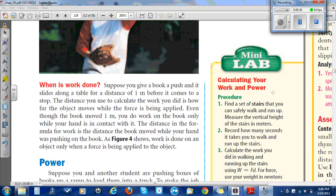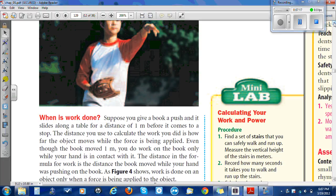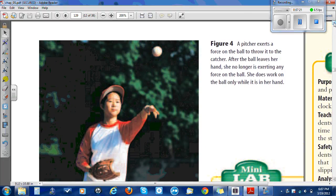What is work done? Suppose you give a book a push and it slides along the table for a distance of 1 meter before it comes to a stop. The distance you use to calculate the work you did is how far the object moves while the force is being applied. Even though the book moves 1 meter, you do work on the book only while your hand is in contact with it. The distance in the formula for work is the distance the book moved while your hand was pushing on the book. As figure 4 shows, work is done on an object only when a force is being applied to the object. In figure 4, a pitcher exerts a force on the ball to throw it to the catcher. After the ball leaves her hand, she no longer is exerting any force on the ball. She does work on the ball only while it is in her hand.